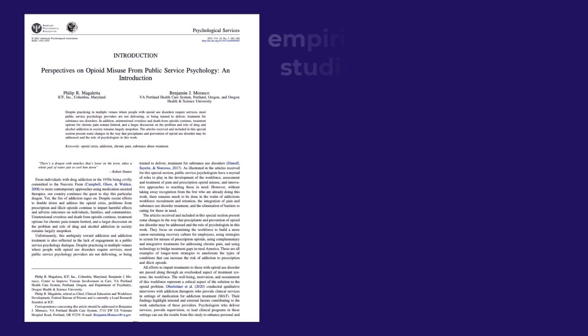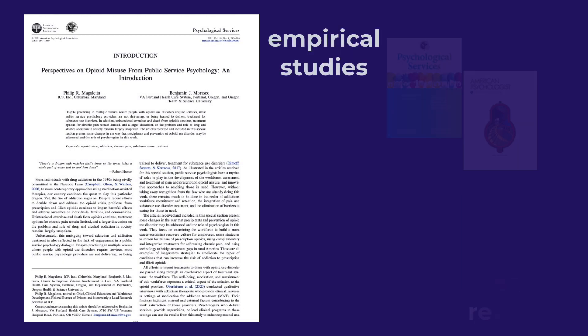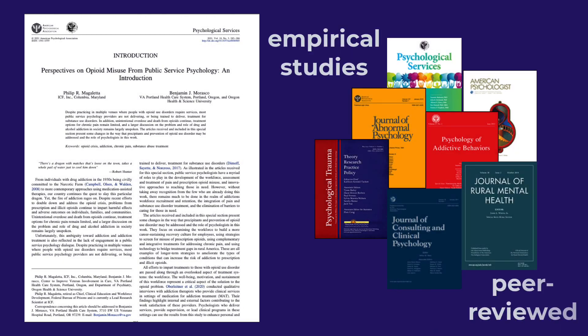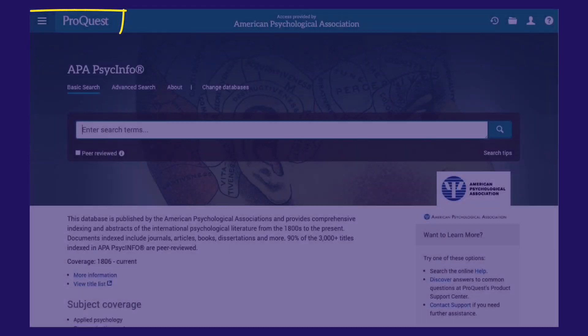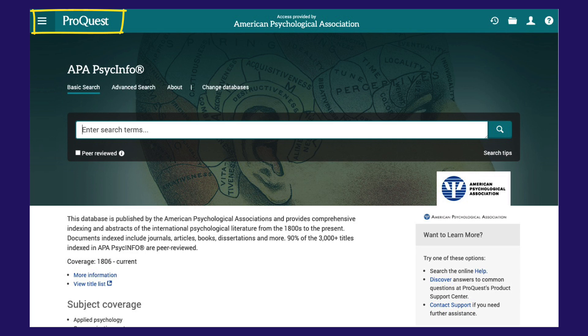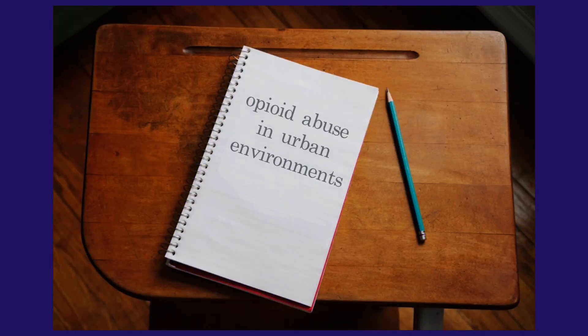Welcome. In this video, we'll demonstrate a quick and easy way to find empirical studies from peer-reviewed journals using APA PsychInfo on the ProQuest platform. For this example, I want to find studies on opioid abuse in urban environments.